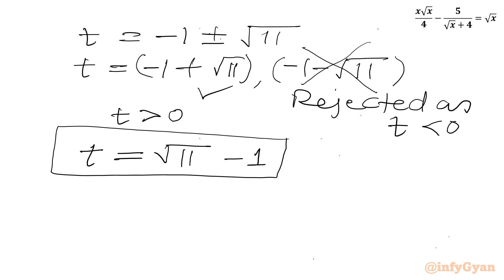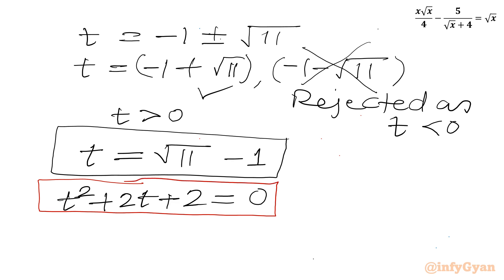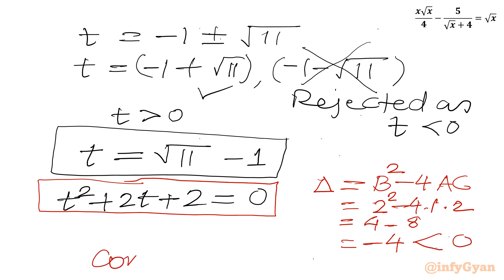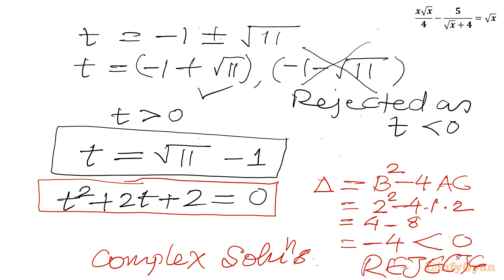For the second quadratic equation t² + 2t + 2 = 0, I will calculate the discriminant: b² − 4ac = 4 − 8 = −4. The discriminant is negative, so there are only complex solutions — this equation is rejected.